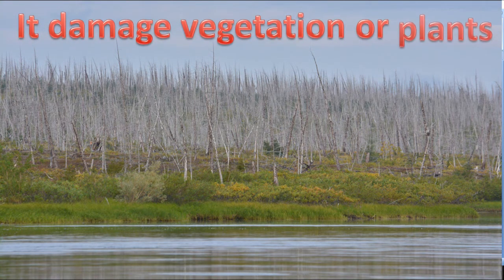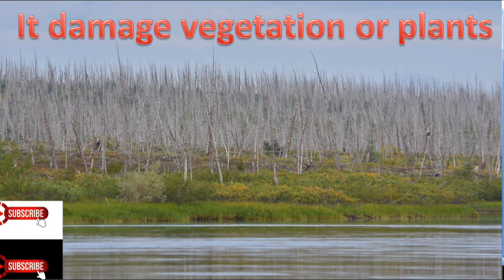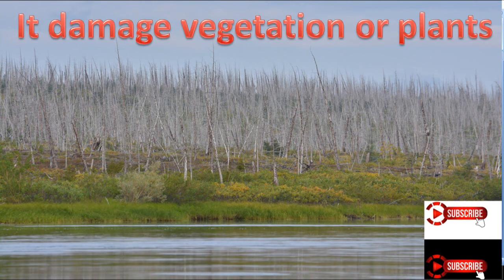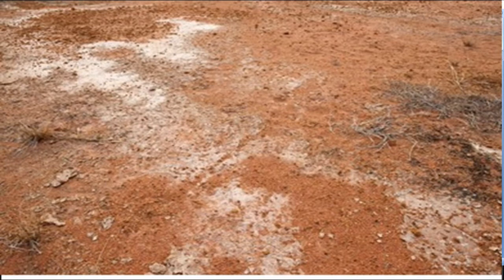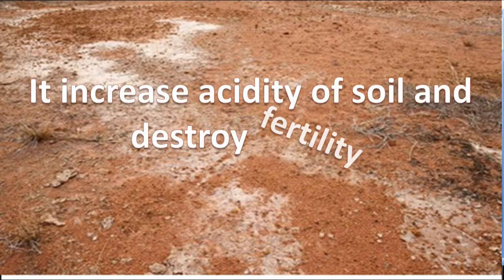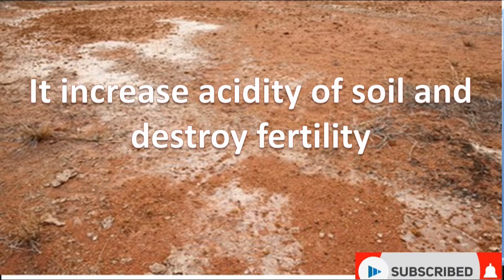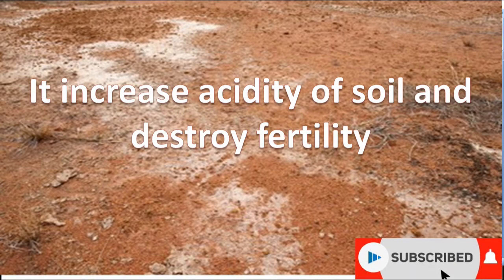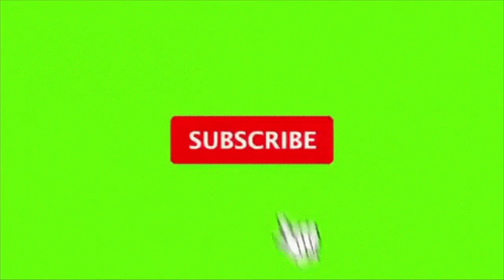It damages vegetation or plants. Acid rain causes plants to dry out. It also increases the acidity of soil and destroys the fertility of soil.